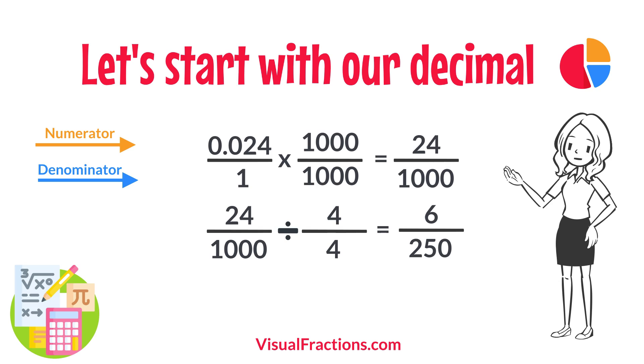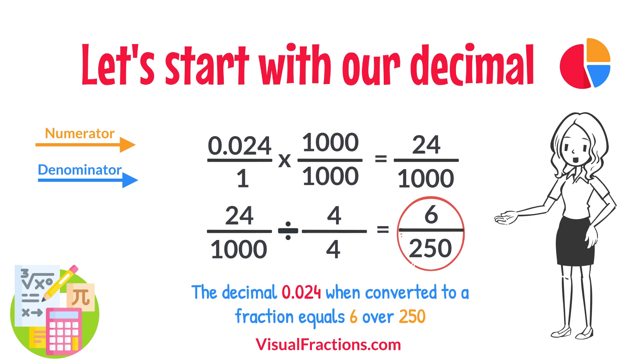So, 24 1,000ths simplifies neatly to 6 over 250. And there you have it. The decimal 0.024 when converted to a fraction equals 6 over 250.